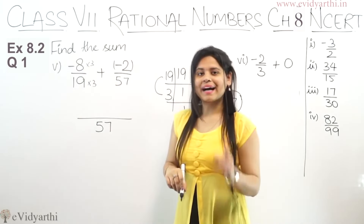Now coming to the 6th part, which is very simple: minus 2 upon 3 plus 0. We know that for any number — whether it's an integer or a rational number — if we add zero to it, the number stays as it is. So if we add zero to minus 2 upon 3, the answer is simply minus 2 upon 3. Now let's come to the next part.